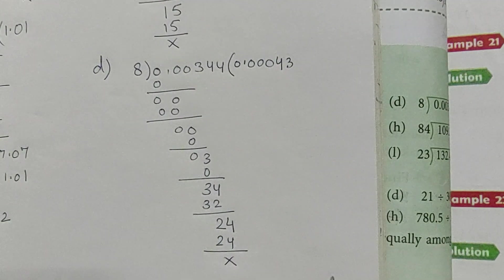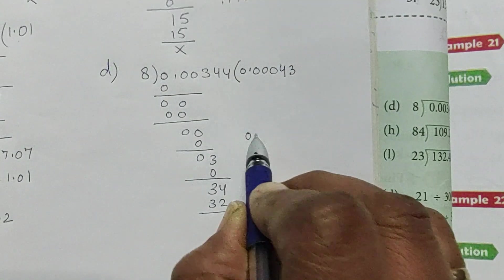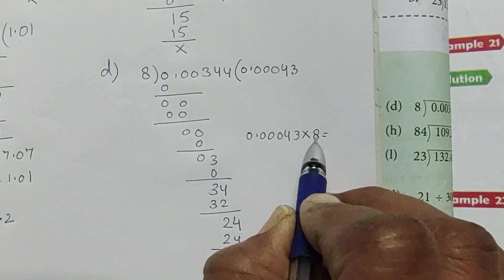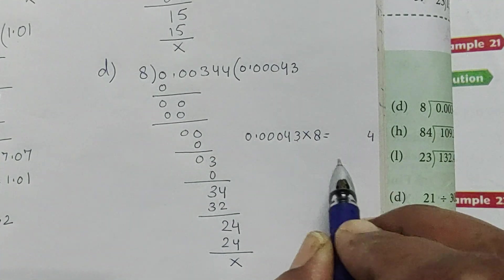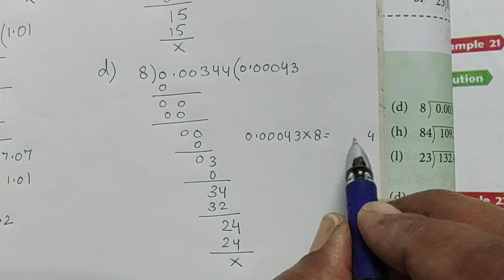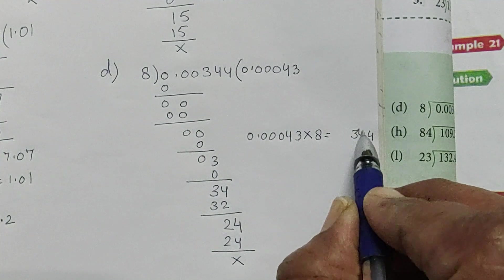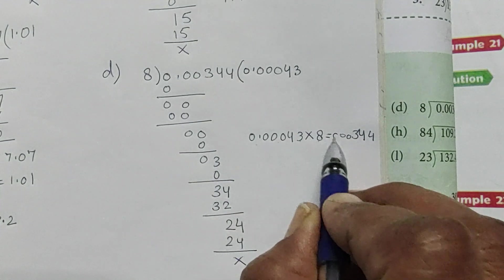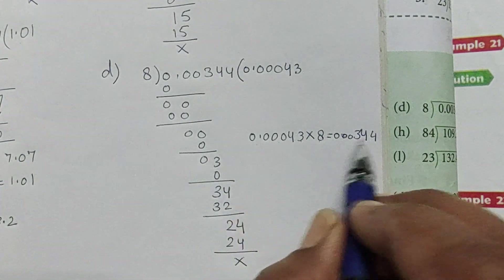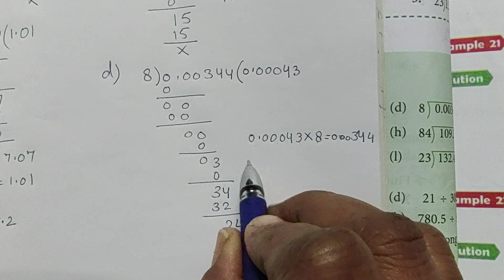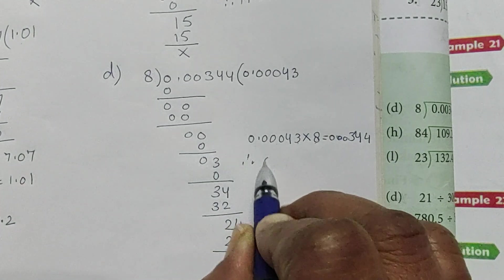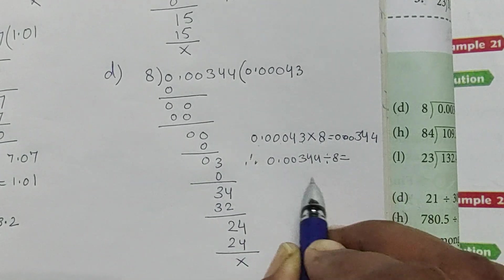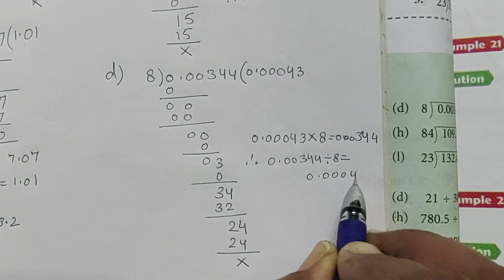Okay, now we will check this. So 0.00043 multiplied by 8 is equal to: 8 into 3 is 24, carry 2. 8 into 4 is 32 plus 2 is 34. And 8 into 0 is 0, 8 into 0 is 0, and 8 into 0 is 0.